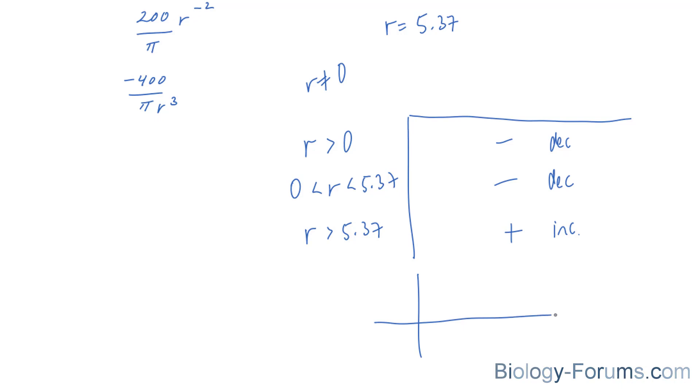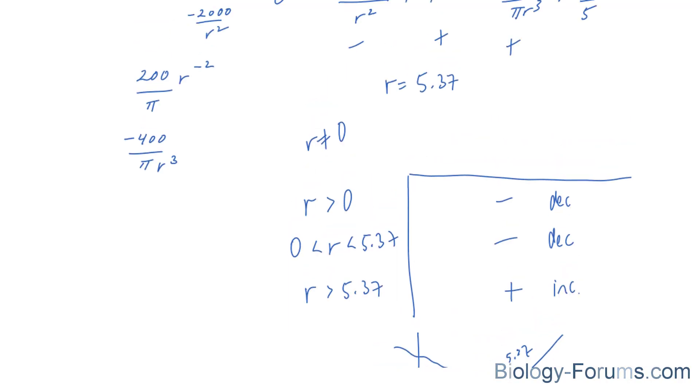So what this suggests is that 5.37 does occur at a minimum. Now, to give you a visual, the function, whatever it looked like, was decreasing up until 5.37. I'm not too sure of the y, and it started to increase. So therefore, that is a local minimum.